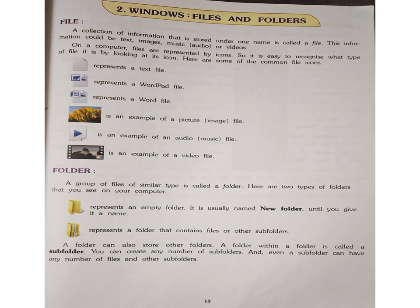First of all, we will see what is a file. A collection of information that is stored under one name is called a file. This information could be text, images, music, that is audio, or videos. So a collection of information like text, images, music, and videos stored under one name is called a file.